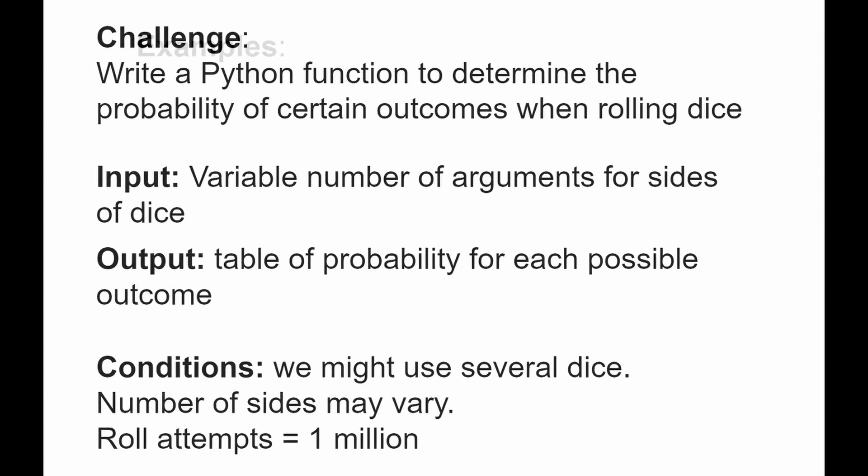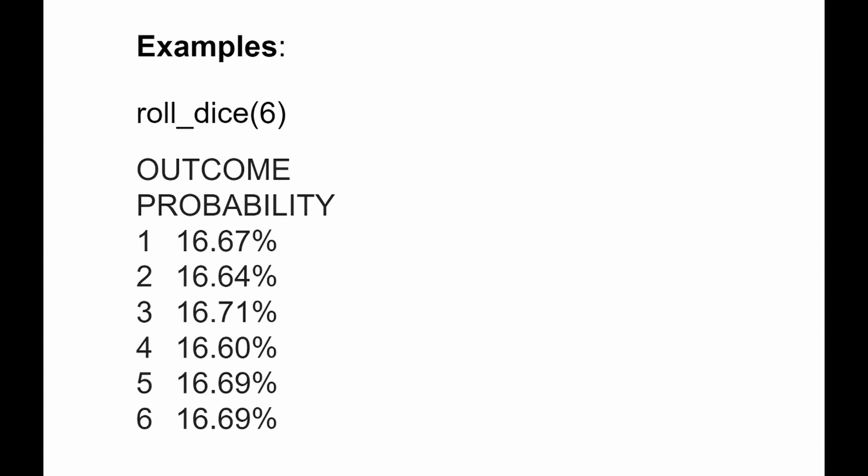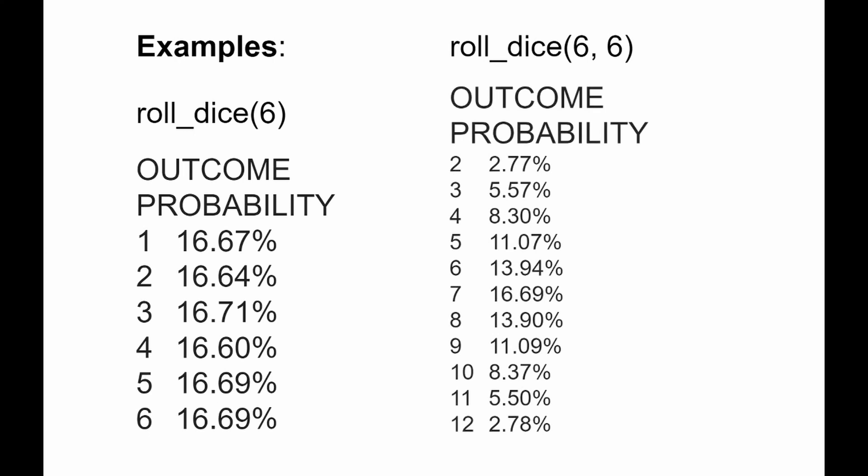Let's have a look at the examples. So we have our function — we'll call it roll_dice — and we pass the number of sides for a die. So we have one six-sided die, and the function returns the probability for each side of the die. It equally works for two six-sided dice, but here we get the probability of the sums — in other words, what's the probability of throwing seven, eleven, three, and so on. Pause the video here and try to solve it yourself, and I'll see you on the other side with my solution.